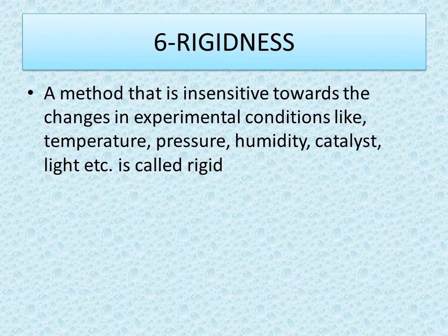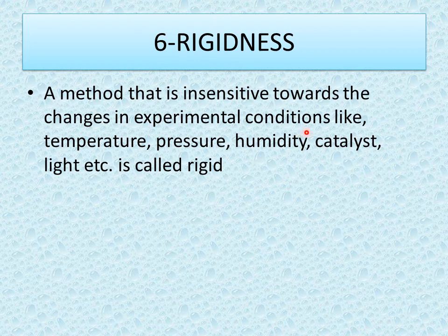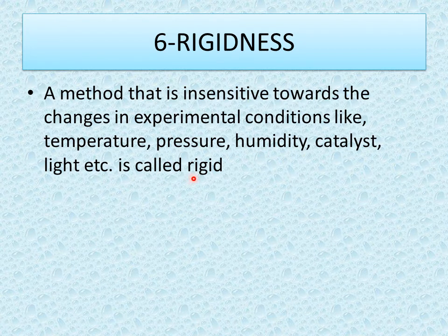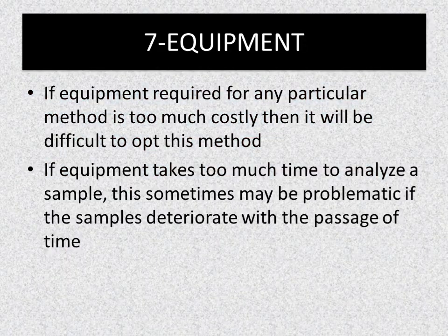The next factor is rigidness. A method that is insensitive to changes in experimental conditions such as temperature, pressure, humidity, catalysts, and light is called rigid. If we make small changes in these experimental conditions and the method does not show any change in response, it is called a rigid method.